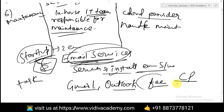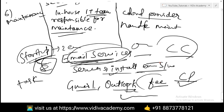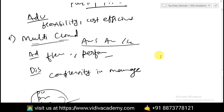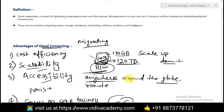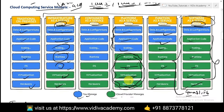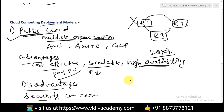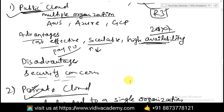Cloud computing allows the business to focus on its core tasks rather than managing infrastructure. In this video, I covered the basic definition of cloud computing, its advantages, cloud computing service models (IaaS, PaaS, SaaS, FaaS), and deployment models (public, private, hybrid, multi-cloud). If you have any doubts, please comment down below. Also check out my Azure DP-203 data engineering course on my YouTube channel. Thank you!